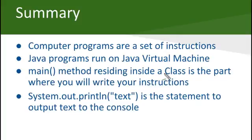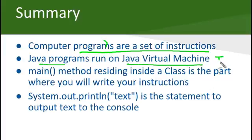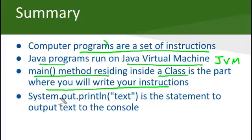Let us now summarize what we have learnt so far. We have learnt that computer programs are sets of instructions. That Java programs run on the Java virtual machine or the JVM. That there is a class for each program you write, and there is a main method residing inside the class. And this is where you will write your instructions. And we also had a look that system.out.println text is the statement which outputs text to the console. And remember that every statement in Java ends with a semicolon.